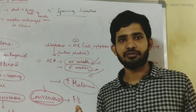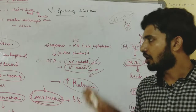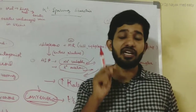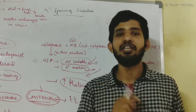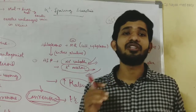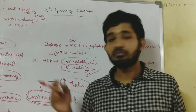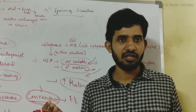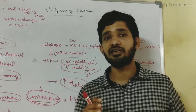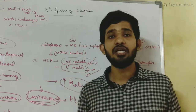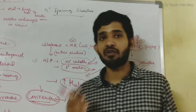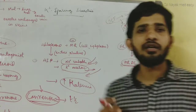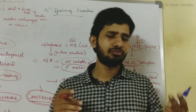Spironolactone has a severe adverse drug interaction with ACE inhibitors. ACE inhibitors cause hyperkalemia, and when spironolactone is given along with ACE inhibitors, both increase the hyperkalemic effect. Severe hyperkalemia is very dangerous and lethal — it can cause severe arrhythmia and cardiovascular disorders.